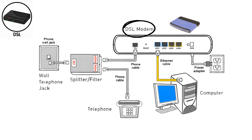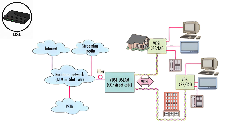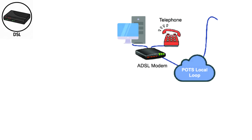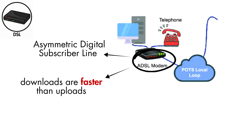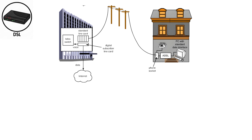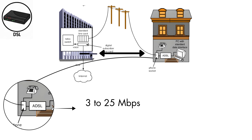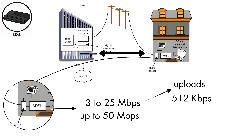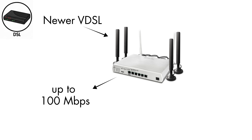DSL works by using a DSL modem in the home and a splitter or microfilter on the phone jacks to keep high-frequency data separate from low-frequency voice. Your modem connects to a DSLAM at the ISP's central office, which sends your data to the Internet backbone. Most home connections use ADSL, where downloads are faster than uploads, while symmetric DSL is used mainly by businesses needing equal speeds. DSL speeds vary with distance — ADSL delivers around 3 to 25 Mbps downloads, sometimes up to 50 Mbps, with uploads between 512 kbps and 3 Mbps. Newer VDSL can reach up to 100 Mbps over shorter distances.